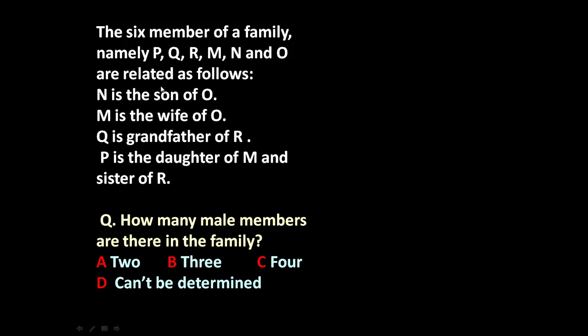N is son of O. M is wife of O. Q is grandfather of R. P is daughter of M and sister of R. Now based on this information, the given question is: how many male members are there in the family?